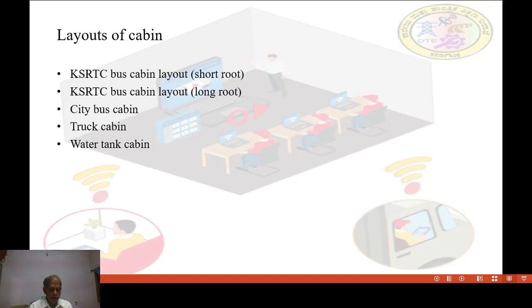Layout of cabin. First one is KSRTC bus cabin layout for short route, about 150 km route.